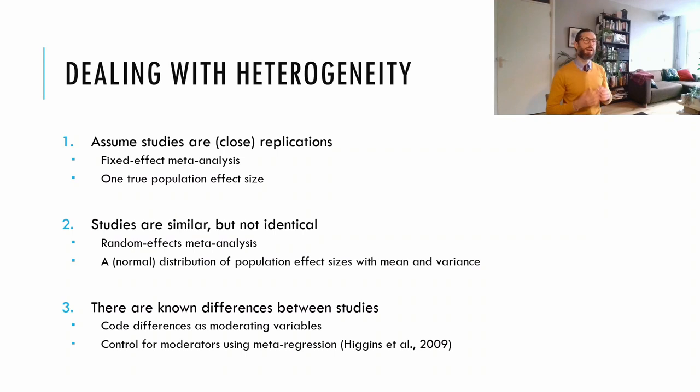Another assumption is that studies are similar but not closed replications. Any differences between studies are small and random, not systematic. If this assumption is defensible, we can use a random effects meta-analysis. That basically assumes that the population effect sizes follow a normal distribution and we can estimate its mean and variance, which is called tau squared.